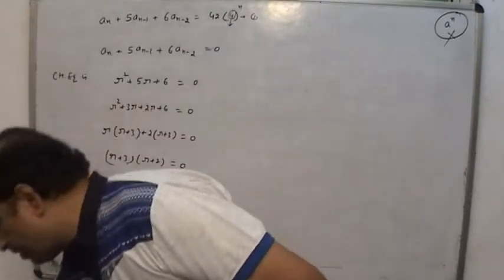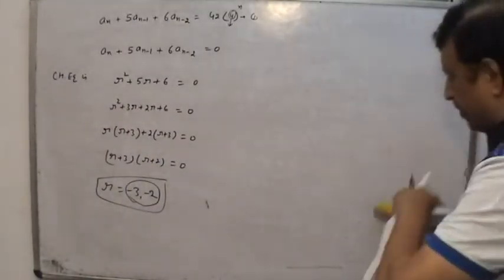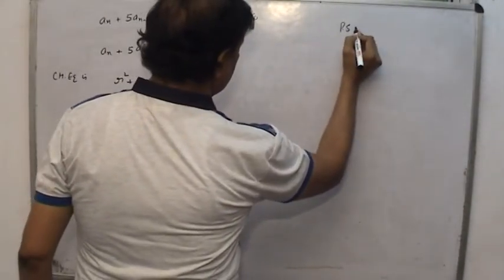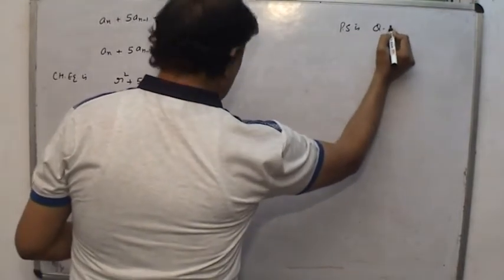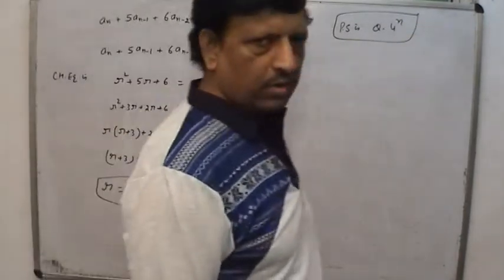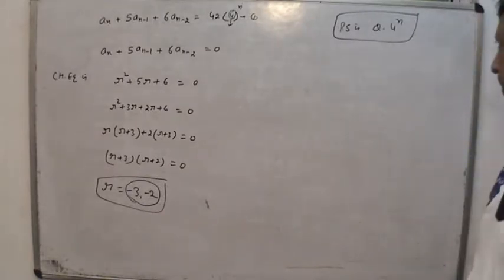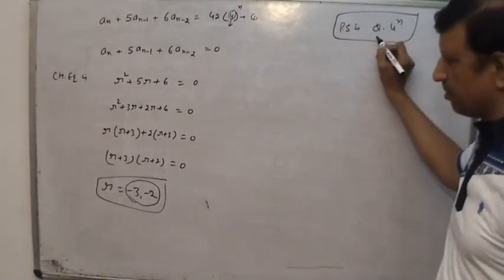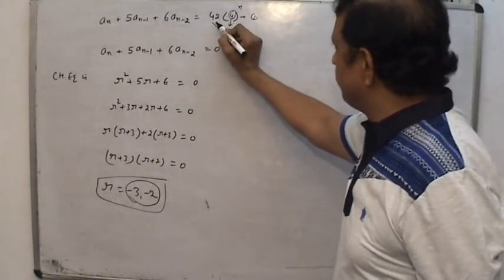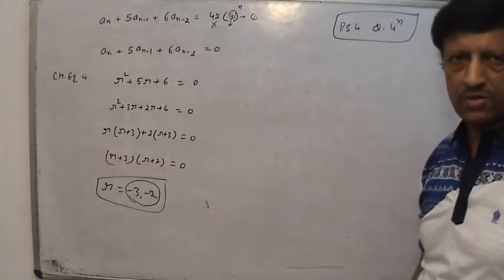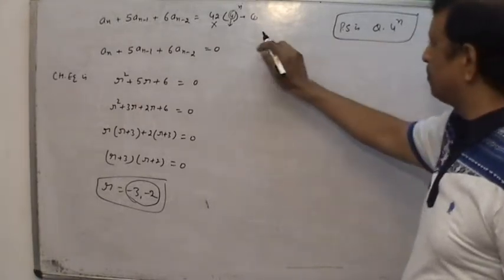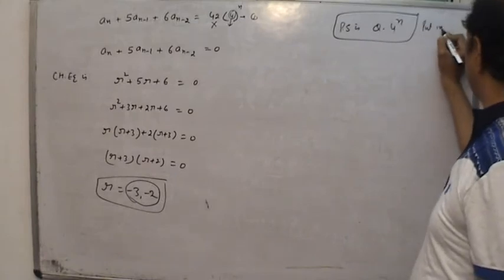When a is not a part of the characteristic roots, the particular solution is q into 4 raised to the power n, where q is any constant. We use this theorem for this case and will discuss other conditions in other examples. Now we put this particular solution into the original recurrence relation.